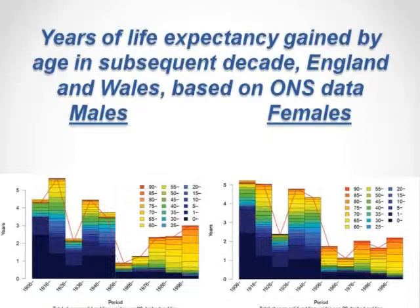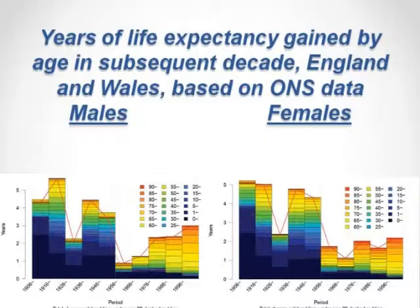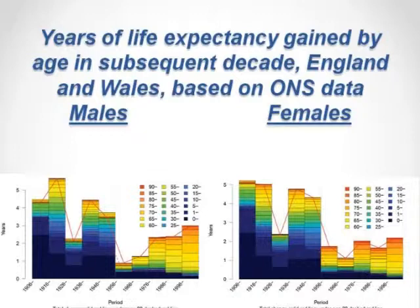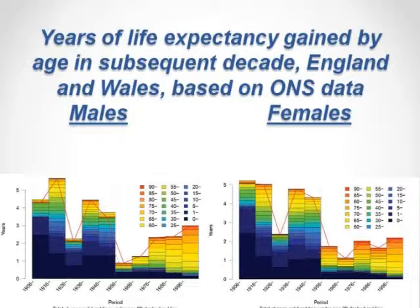The shading shows how you can decompose these changes into improvements at different age groups. In the early years of the century those improvements were very heavily concentrated in infant and child mortality — around 150 per thousand live births at the start of the 20th century, not very different from the mid-16th century. Over time the contribution of infant and child mortality has declined substantially and been replaced by improvements at older ages. It's only quite recently that one has seen much contribution from improvements in mortality at the oldest ages.